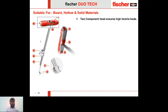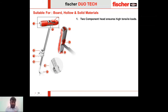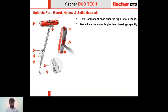The DuoTech anchor comes with two components — a red component and a gray component — joined together to form a wide anchor that catches more surface area of the base material, distributing the load over a larger area for higher tensile loads. It also comes with a metal inset between the two components that provides bearing capacity — preventing the anchor from bending under heavier loads when a suspended application is installed.